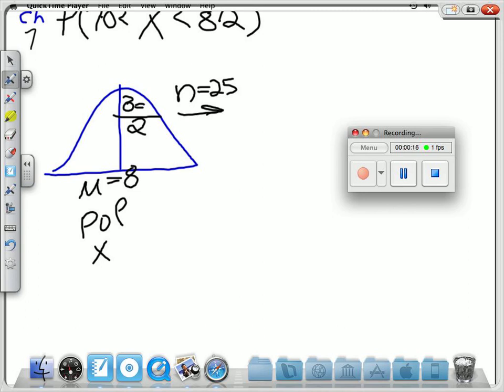Chapter 7. We're looking for the probability that X-bar is in between 7.8 and 8.2, that example, number 5 or 6 in Chapter 7.